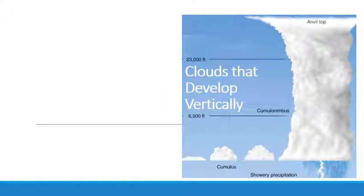Clouds of vertical development don't fit into any of the three height categories. Instead, they have their bases in the low height range and extend upward into the middle or high altitudes, because they're growing from the bottom up — developing vertically.